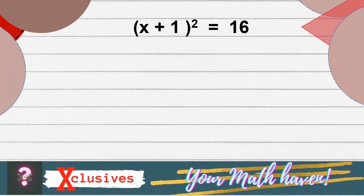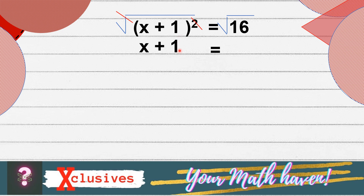Now, for our second example, we are going to solve for the roots of quantity x plus 1 squared is equal to 16. To solve this kind of quadratic equation using extracting the roots, we can automatically do the square root. So, we can cancel the square of this binomial and we can extract x plus 1 is equal to the square root of 16, that is positive and negative 4.